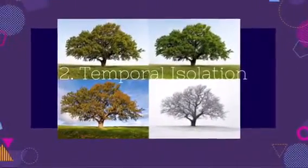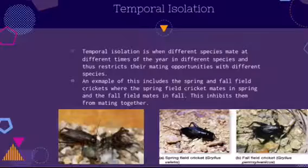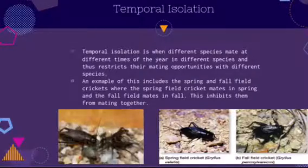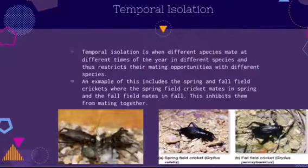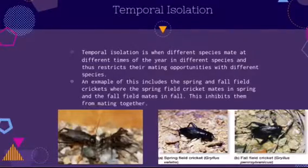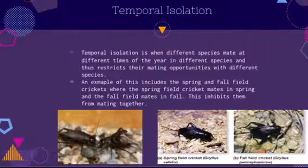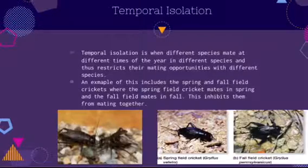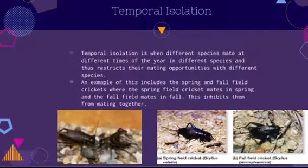Temporal isolation is when different species mate at different times of the year, and thus restricts their mating opportunities with different species. An example of this includes the spring and fall field crickets, where the spring field cricket mates in spring and the fall field mates in fall, inhibiting them from mating together.